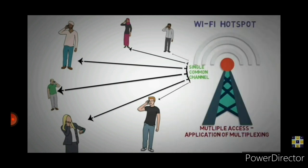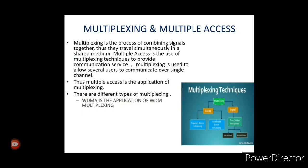Multiplexing is the process of combining signals so they travel simultaneously in a shared medium. Multiple access is the use of multiplexing techniques, so WDMA is the application of WDM multiplexing. We have various other kinds of multiplexing techniques — FDM, TDM, and WDM. In TDM there are two further categories: synchronous and asynchronous.